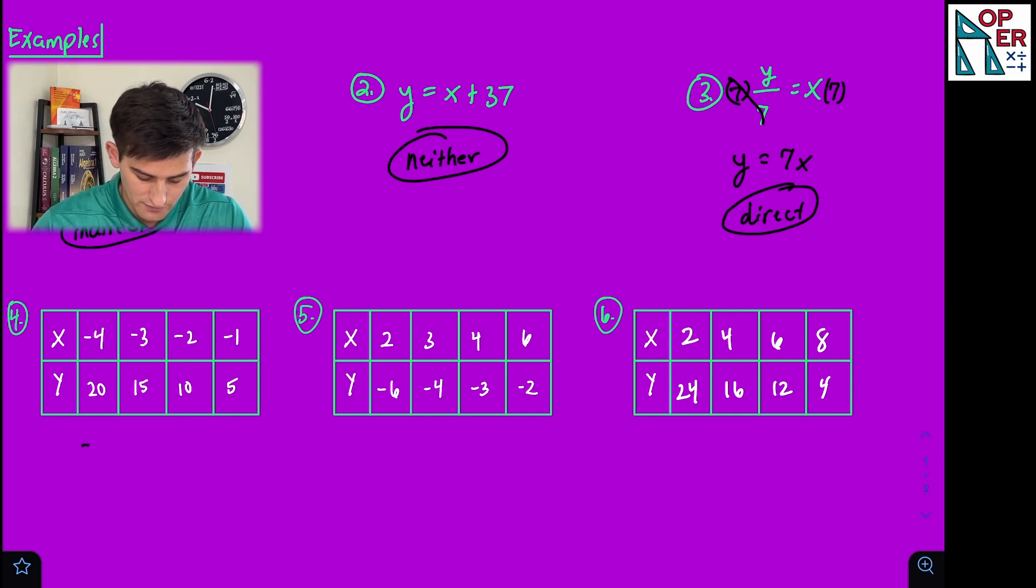20 divided by negative four would be negative five, 15 divided by negative three, 10 divided by negative two, and five divided by negative one. So the ratio y divided by x is constant, so we would say that this is an example of direct variation.